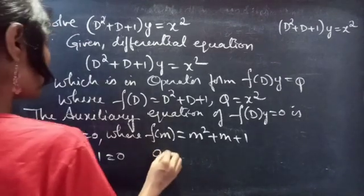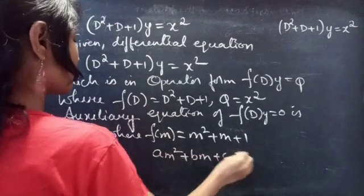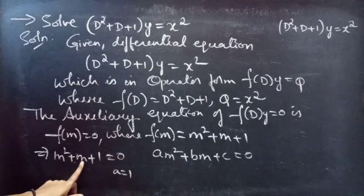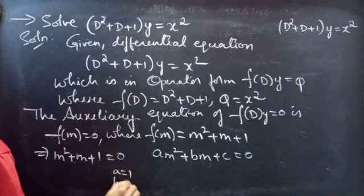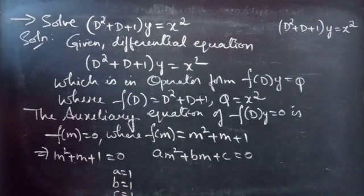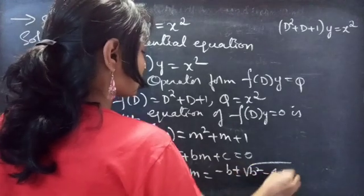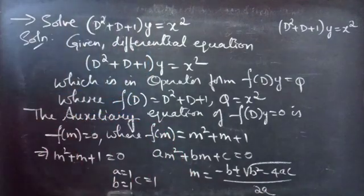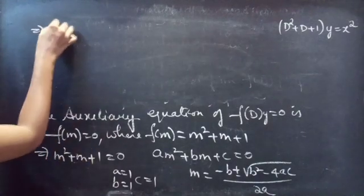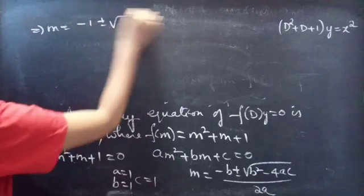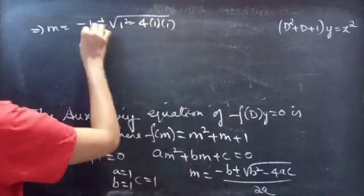Now compare this with the quadratic equation am² + bm + c = 0. Comparing the equations: from the coefficient of m² we get a = 1, from the coefficient of m we get b = 1, and from the constant term we get c = 1. Now let's use the quadratic formula m = (−b ± √(b² − 4ac)) / 2a to find the roots of our auxiliary equation. With a = b = c = 1, m = (−1 ± √(1 − 4)) / 2.